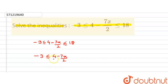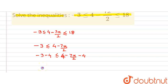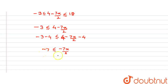To solve it, first we need to remove this 4, so we will subtract 4 from both sides of the inequality. We get minus 3 minus 4 less than or equal to 4 minus 7x by 2 minus 4. This 4 will get cancelled on both sides and the inequality reduces to minus 7 less than or equal to minus 7x by 2. Now we multiply both sides by 2 to get minus 14 less than or equal to minus 7x.